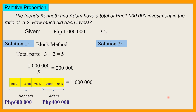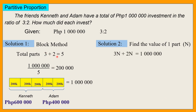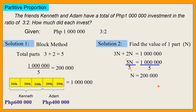Second solution: kuhanin natin ang value ng 1 part. Find the value of 1 part, which is N. Gagawin natin itong 3 parts or 3N, 2 parts or 2N — and that is equal to 1 million. So 5N is equal to 1 million. Para mawala yung 5, divided by 5 — cancel. N therefore is equal to 200,000.